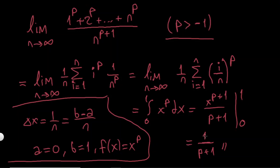If P is less than minus 1, then this thing is gonna be negative because P plus 1 is gonna be less than 0. But I'm adding positive terms: 1 to the P, 2 to the P, they're all positive, no matter what is the P.